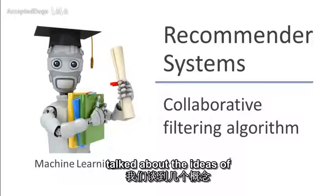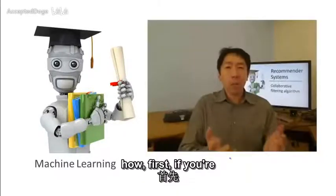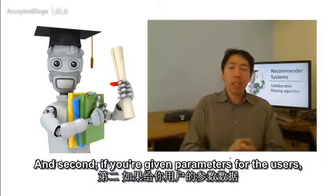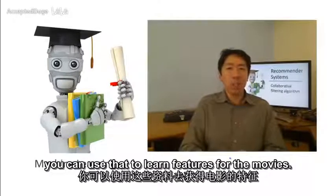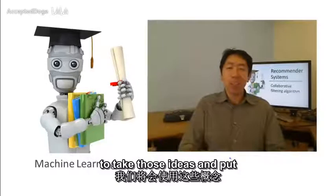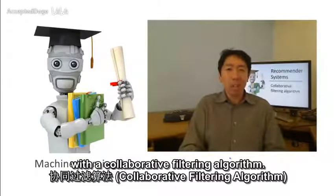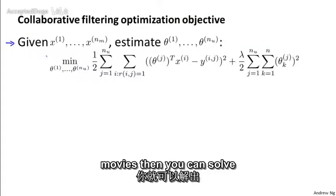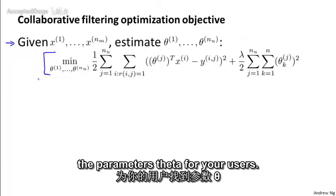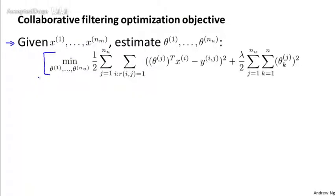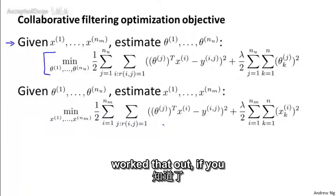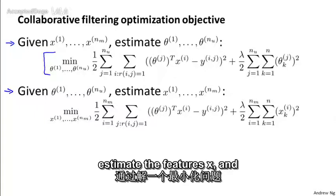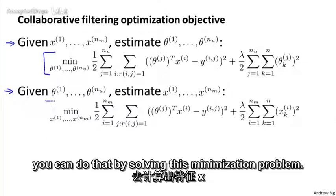In the last couple of videos, we talked about the ideas of how first, if you're given features for movies, you can use that to learn parameters for users. And second, if you're given parameters for the users, you can use that to learn features for the movies. So if you have features for the movies, you can solve this minimization problem to find the parameters theta for your users. And if you are given the parameters theta, you can also use that to estimate the features x by solving this minimization problem.